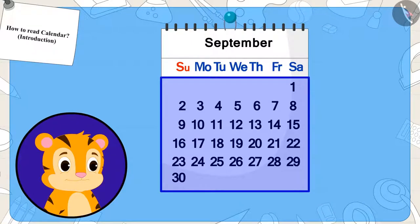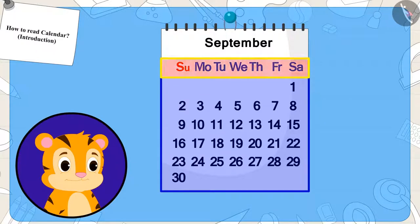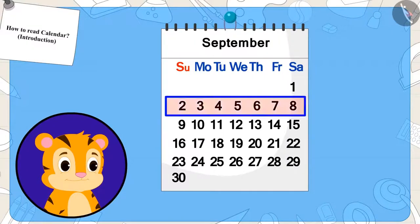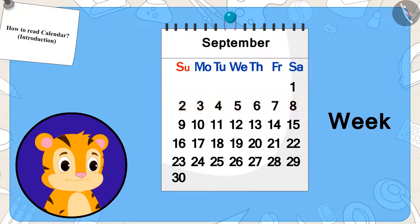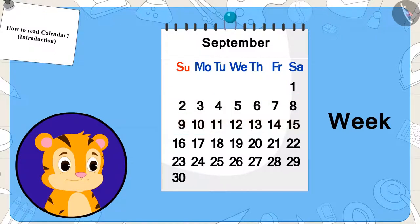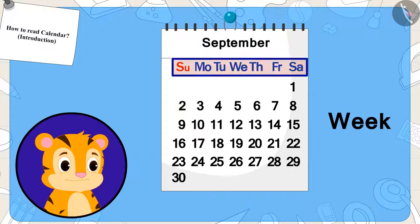Do you know the reason behind it? Because one week is made by adding 7 days, once again the second week starts from the same day. And so, the names of the days are written only above.